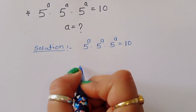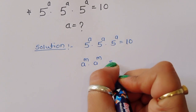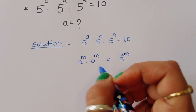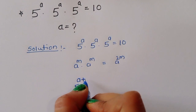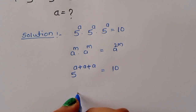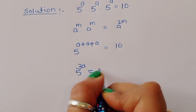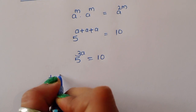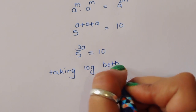We are given 5^a times 5^a times 5^a is equal to 10. We know the formula: a^m times a^m equals a^(2m). Using this formula, we add the exponents: 5^(a+a+a) is equal to 10.